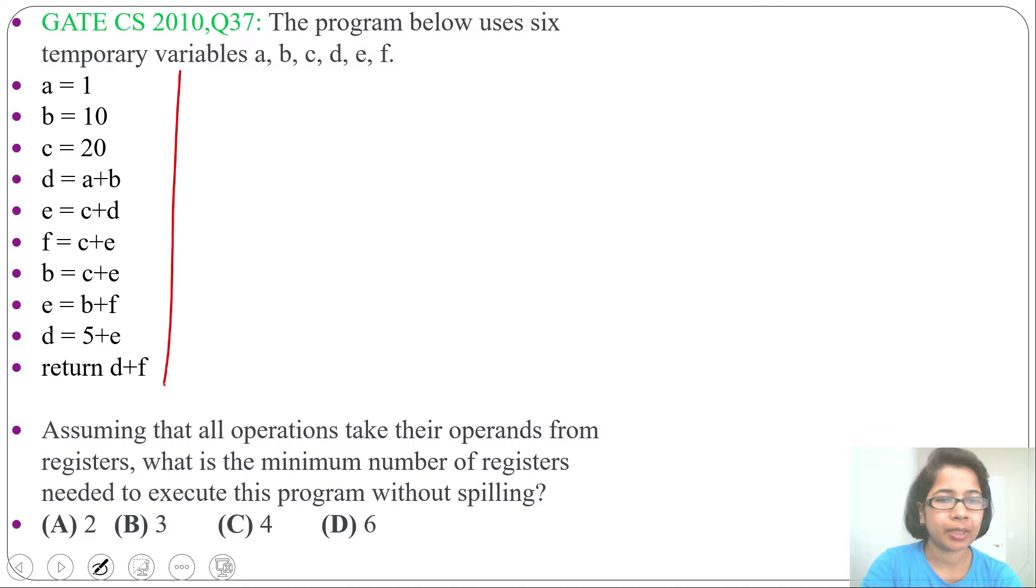Here some intermediate representation is given. Assuming that all operations take their operands from registers, what is the minimum number of registers needed to execute this program without spilling? Without spilling means without store. In 4 options 4 numbers are given and it is asking what will be minimum number of registers required for writing machine instruction for this code.